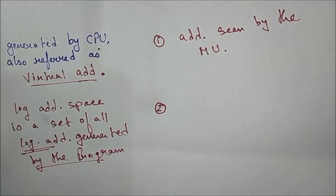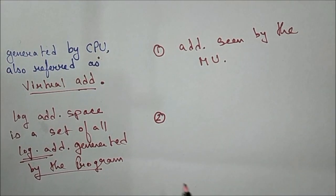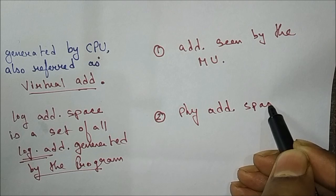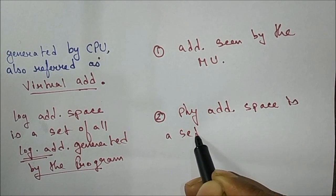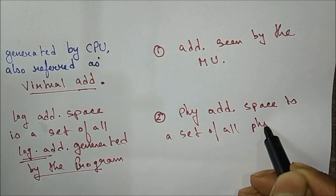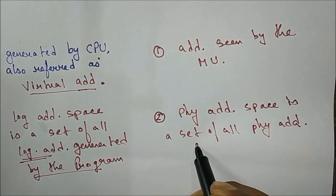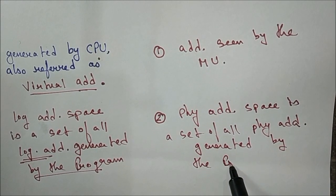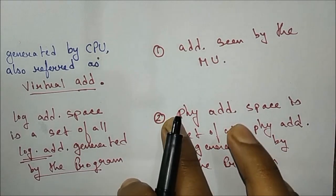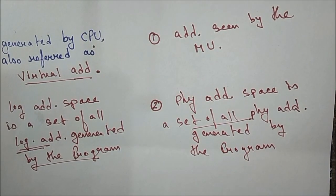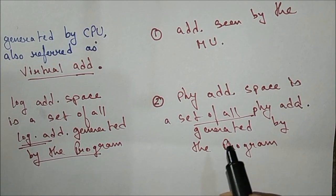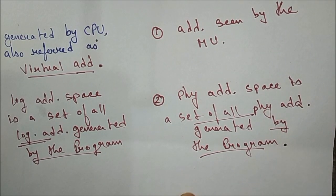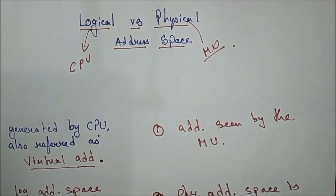In physical address space, it is the set of all physical addresses generated by the program. So physical address space means the group of all physical addresses which is generated by the program. This is the main difference between logical and physical address space in operating systems.